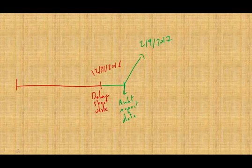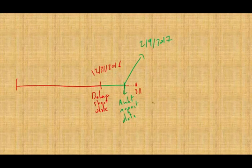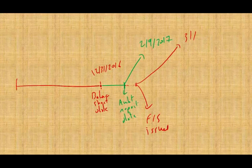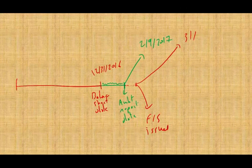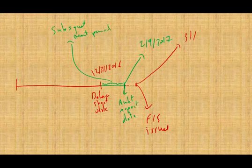Bear in mind that it may take a week or two until the financial statements are issued. Let's assume on March 1st, the financial statements are issued. The period between December 31st and February 9th we call the subsequent event period — the period subsequent to the balance sheet date.